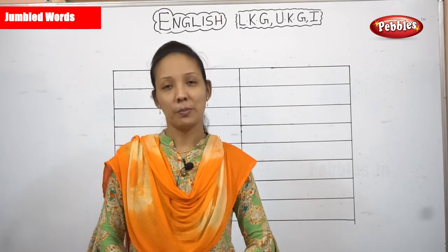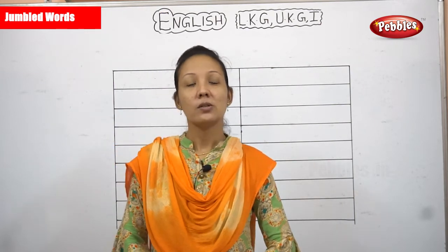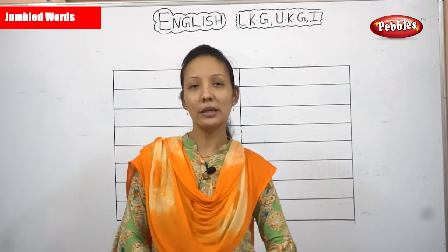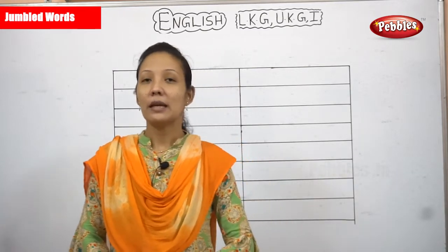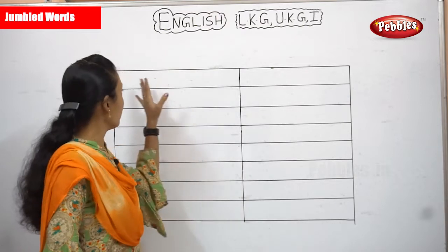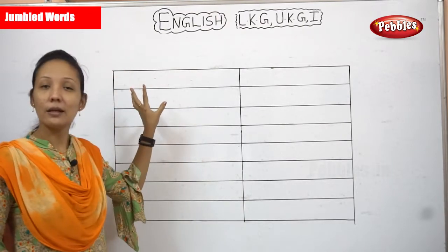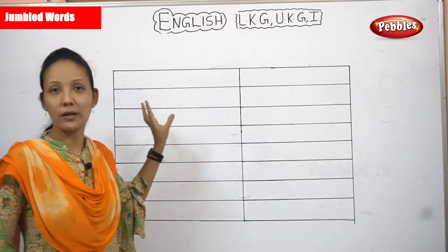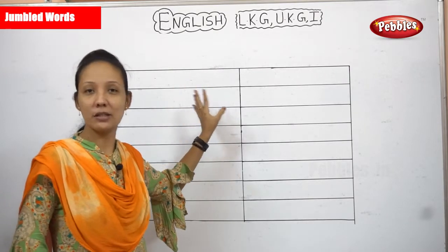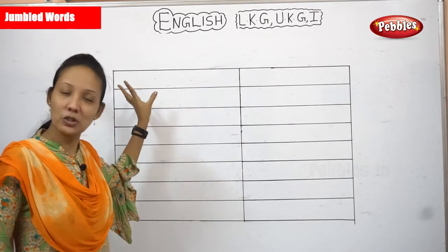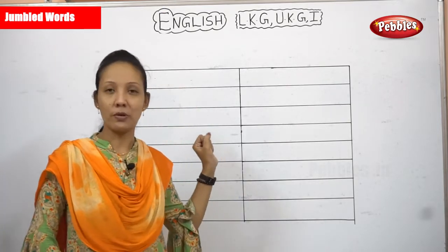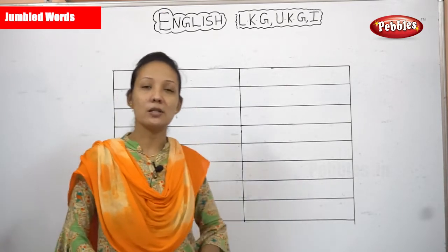A pleasant day and a warm welcome from Pebbles channel. Today I am going to teach you about jumble letters. Jumble words mean first we will write the words in the wrong spelling, and then we will write them in the correct spelling. First it will be in a jumble way, and then we will write it in the proper way.